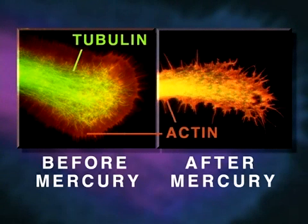Shown here is a neurite growth cone stained specifically for tubulin and actin, before and after mercury exposure. Note that the mercury has caused disintegration of tubulin microtubule structure.